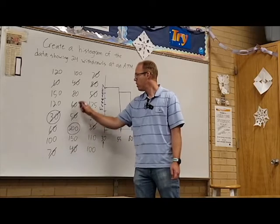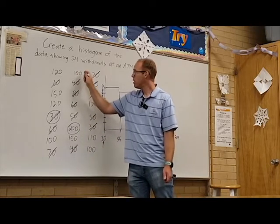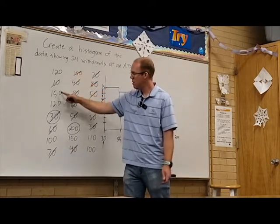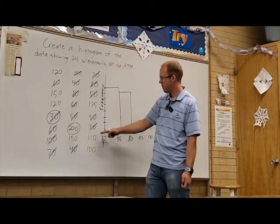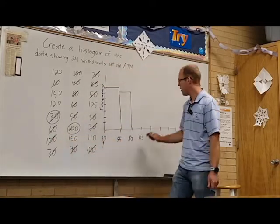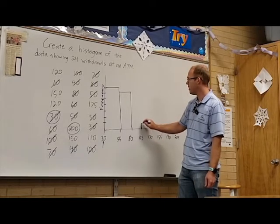1, 2, 3, 4. Make sure I didn't miss anything. 5. There's one over there. I almost missed that. So, we've got 5 here. Again, that's one shorter.